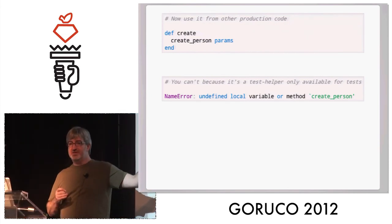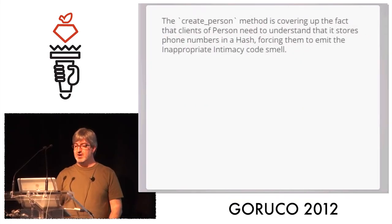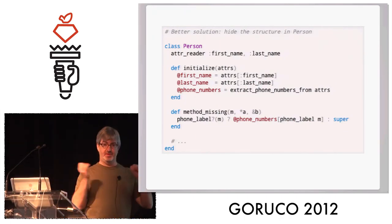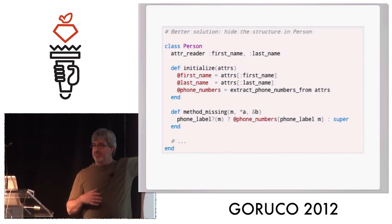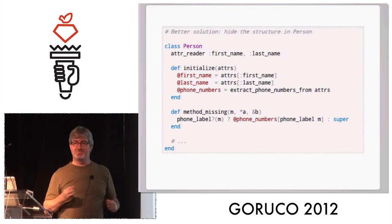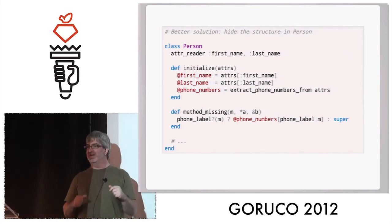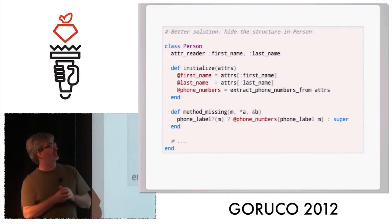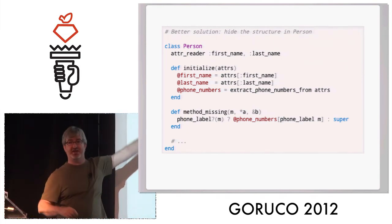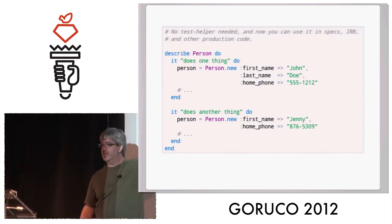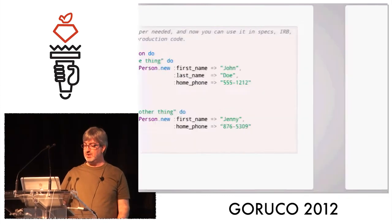What we did by extracting this factory method is cover up a design problem. What we probably want to do is embed all that inside the model itself. You could also define methods explicitly, like a home phone method, and that would be perfectly fine too. The important thing is we could change the implementation all day - the way everybody talks to it is by creating a person and using this interface. That's all I've got - any questions?